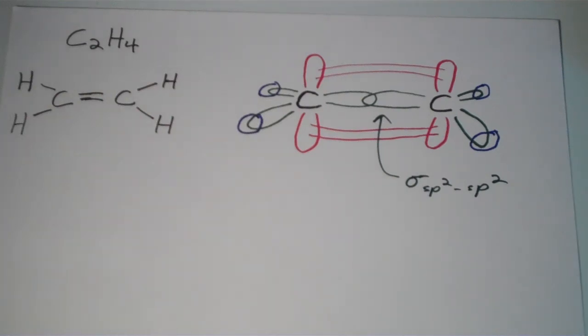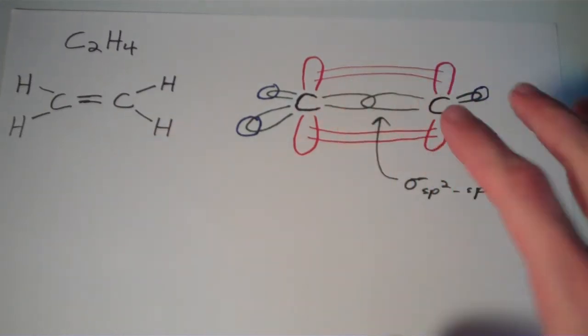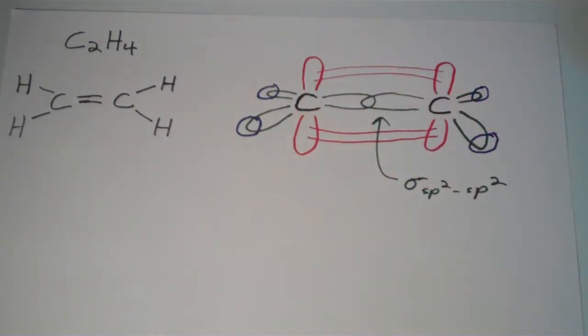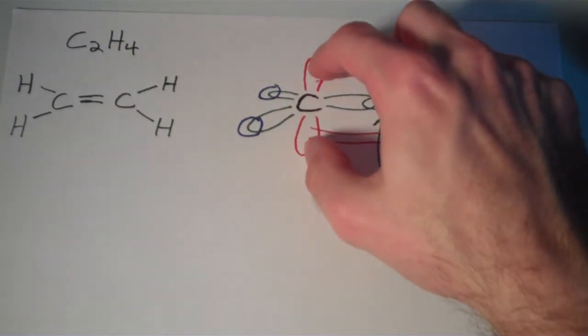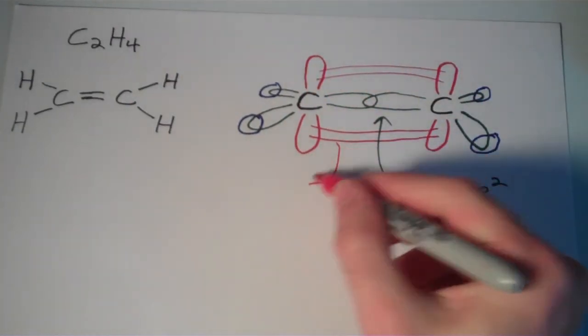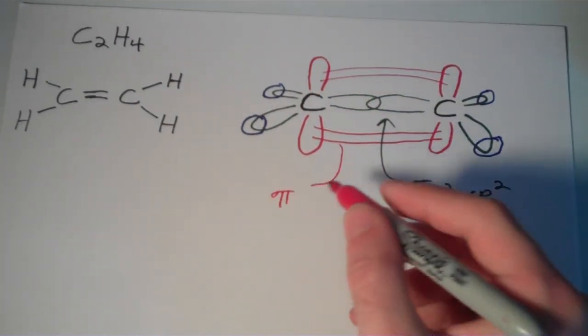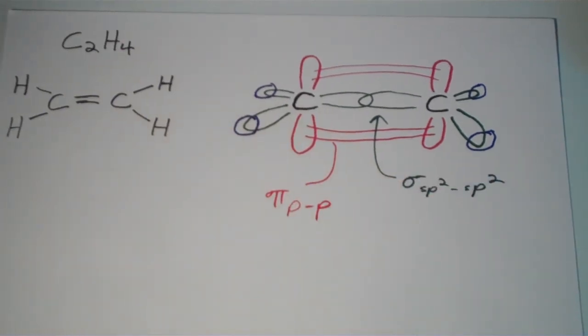And then this overlap, I haven't really drawn it as an overlap. I kind of drew these lines, but that's just because I can't draw these things very well without it becoming all convoluted and cluttered. This p orbital interacting with this p orbital is what we call a pi bond. So this is a pi bond between two p orbitals. So only p orbitals can pi bond.